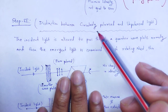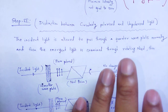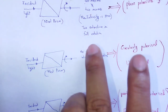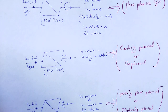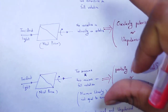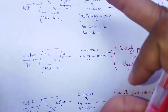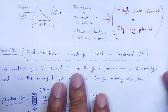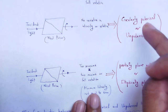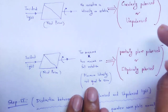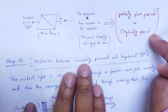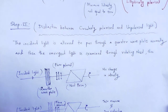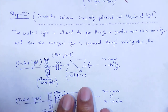Step number two — distinction between circularly polarized and unpolarized. The three possible situations are: variation in intensity; no variation in intensity; or variation in intensity but minimum intensity not equal to zero. From the first step, no variation means circularly polarized or unpolarized, and minimum not equal to zero means partially plane polarized or elliptically polarized. Step number two: distinction between circularly polarized and unpolarized.